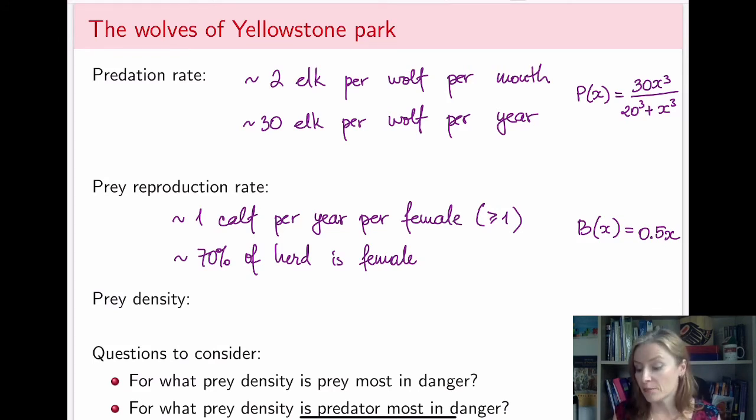Now, as I mentioned earlier, I think some of this data comes from field studies, but also this, for example, is a rough approximation, right?